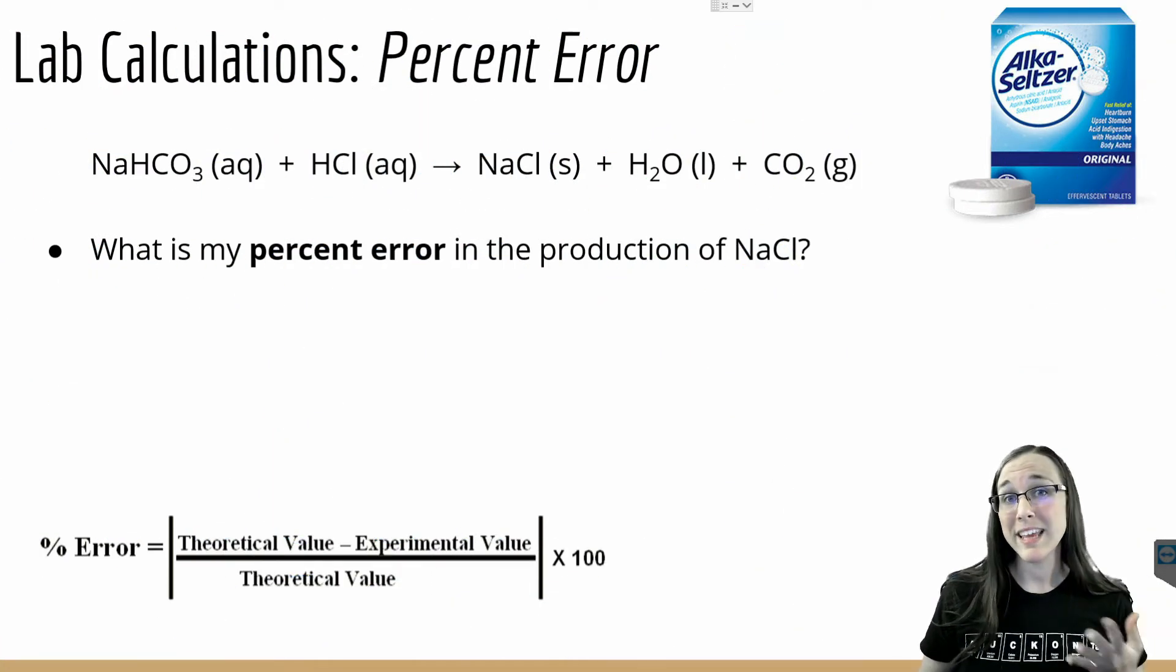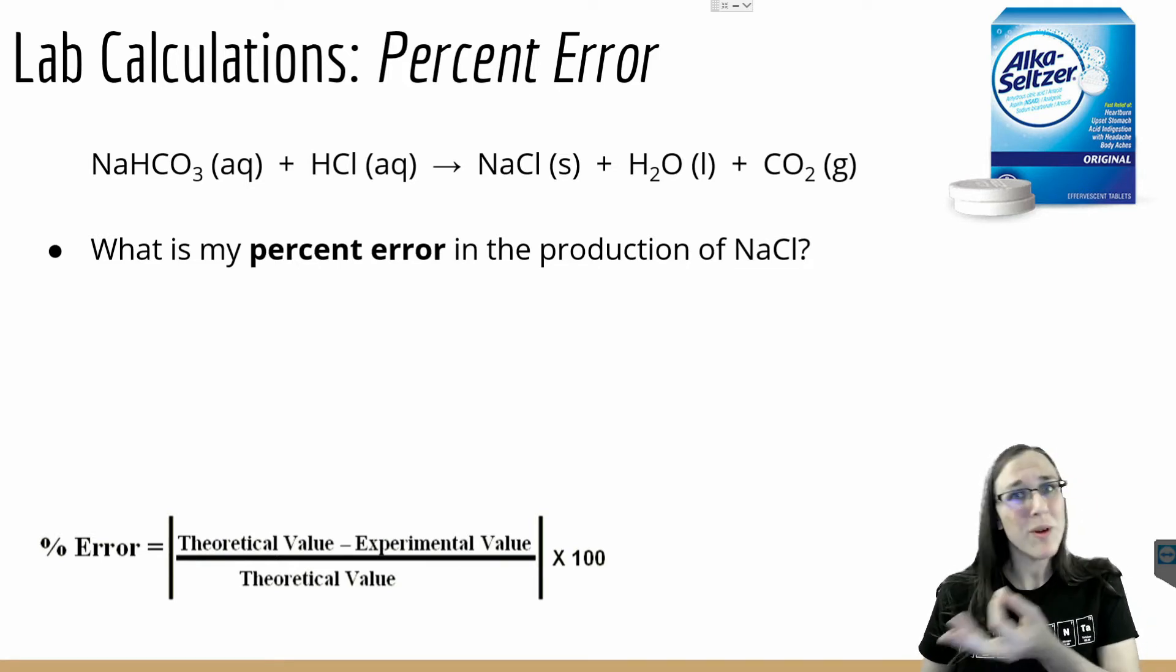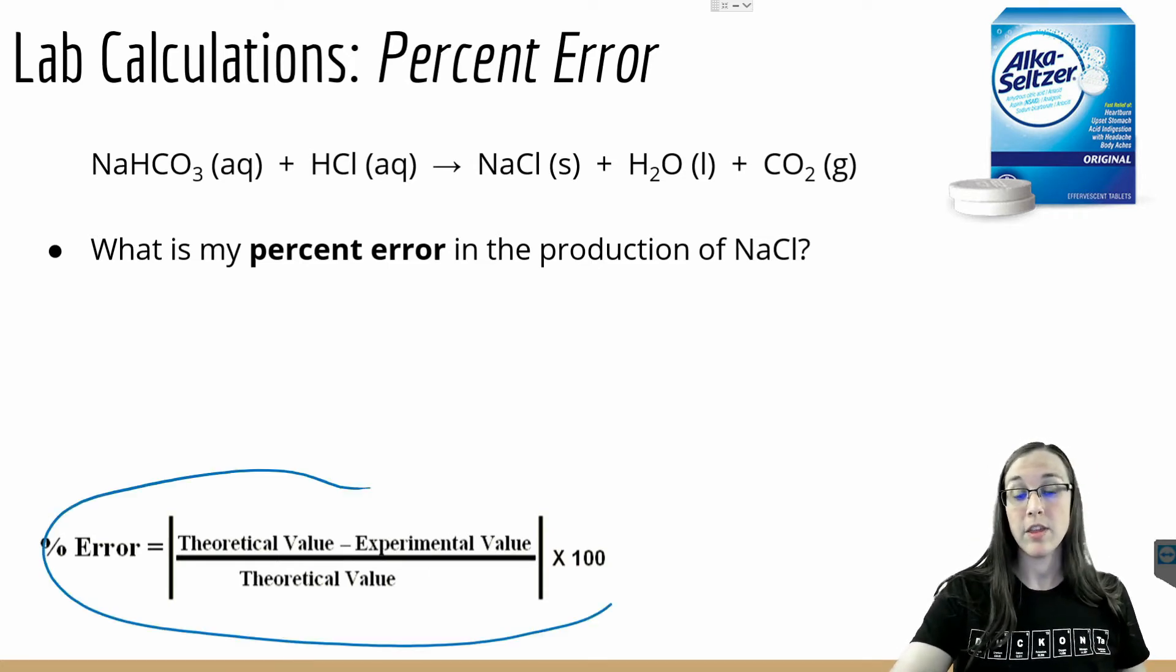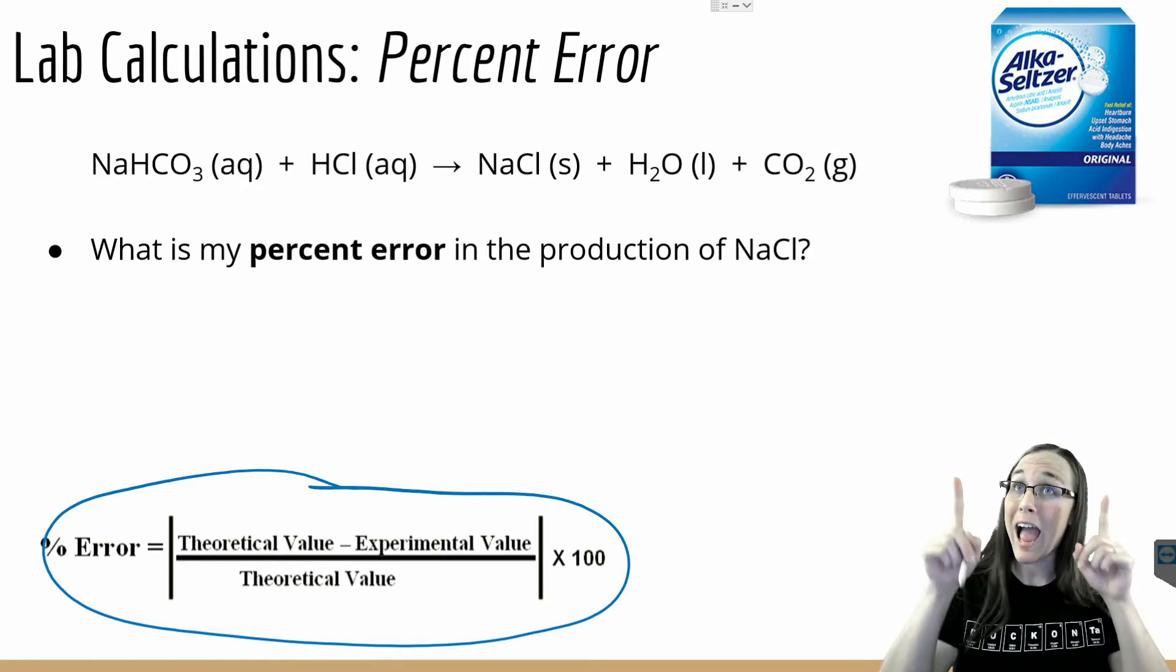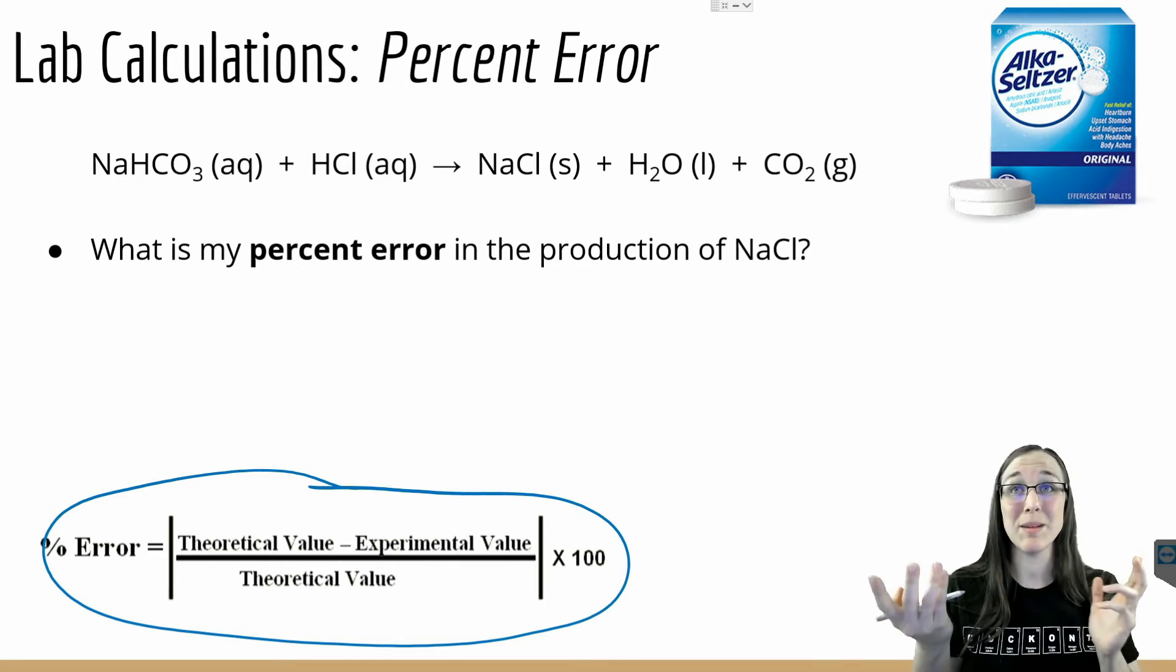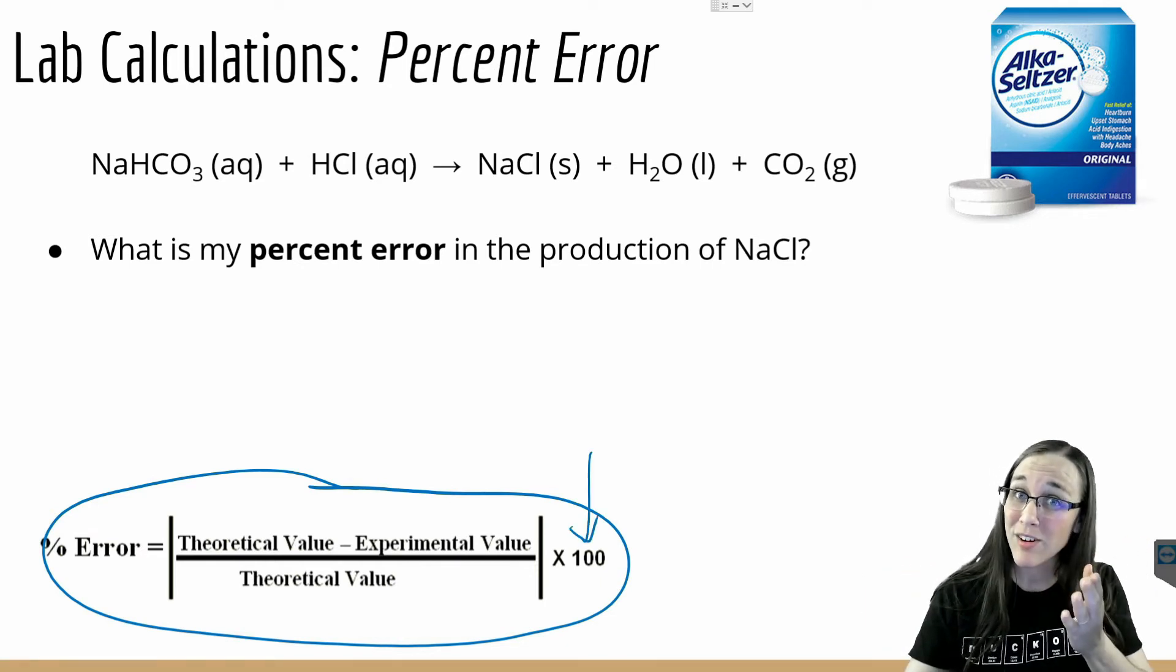Before we can go into the error analysis, it's also important to calculate percent error. This gives you a numerical value that you can also talk about or quantify in your error analysis. The percent error equation is as follows: theoretical value minus experimental divided by theoretical, absolute value thereof, so if you end up with a negative just negate it, it's always going to be a positive value, times 100. And that'll give you a value of your error in percent form.